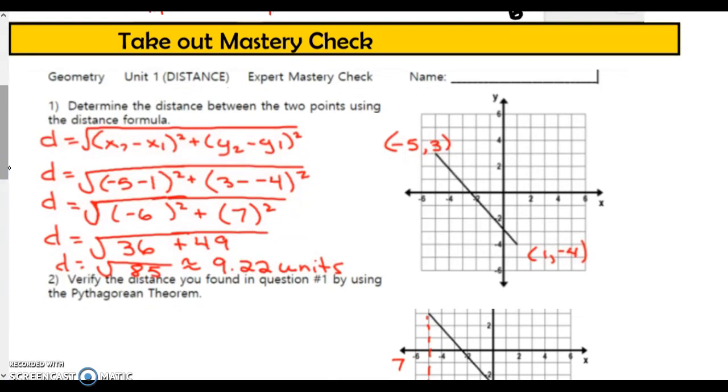Number one asks you to find the distance between two points using the distance formula. Start with what you know. Write the distance formula down and take a look at the picture. You have a point here at negative 5, 3 and a point here at 1, negative 4. So, using the distance formula, you can label your points.